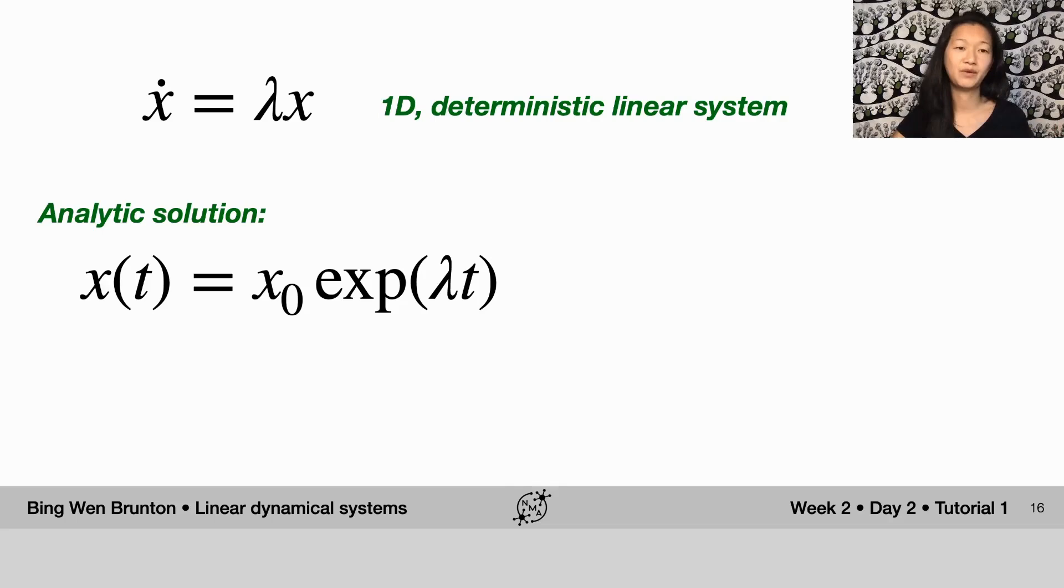Here what I'm going to do is a small change in notation where instead of x dot equals ax, we're going to say x dot equals lambda x. Now lambda we're going to allow to not just be a real valued number but a complex valued number.